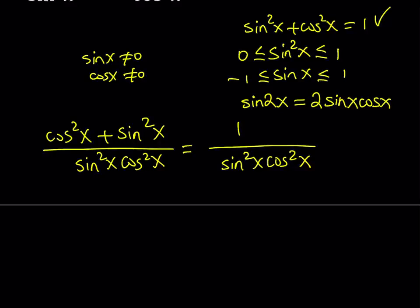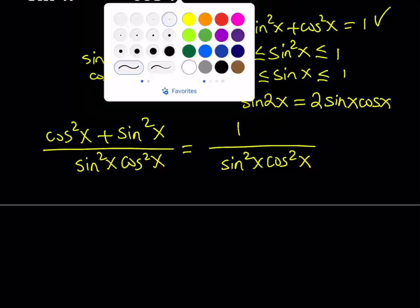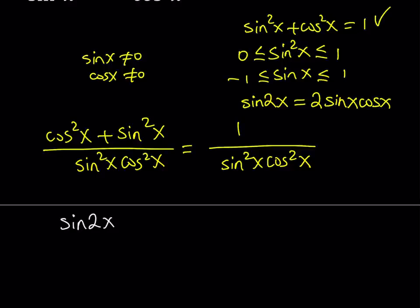Now, how am I going to use sine of 2x here? I do have the product 2 sine x cosine x, but this is squared. So let's go ahead and square sine 2x. What do you get if you square sine 2x? You get 4 sine squared x cosine squared x.